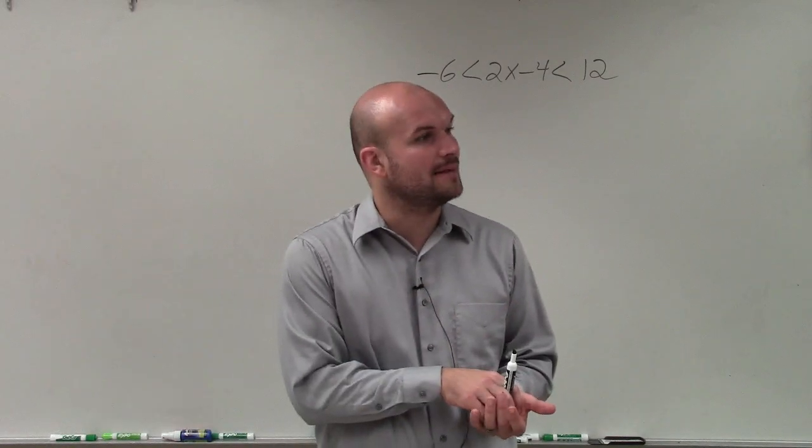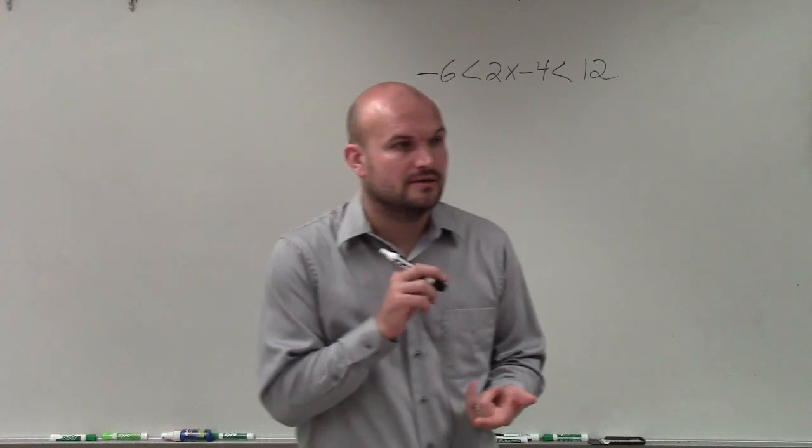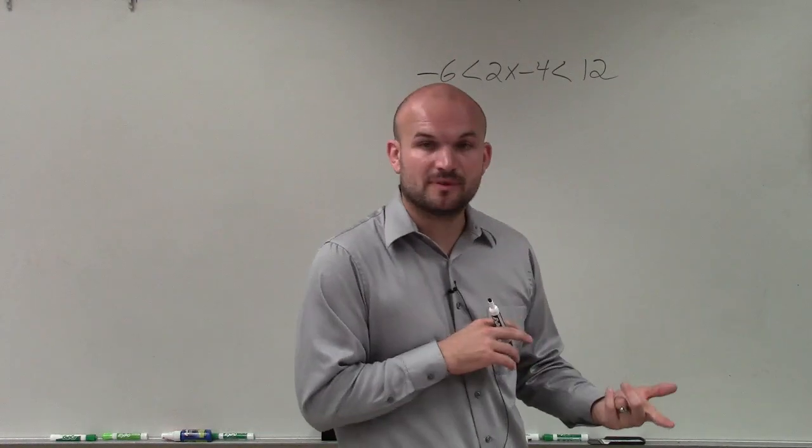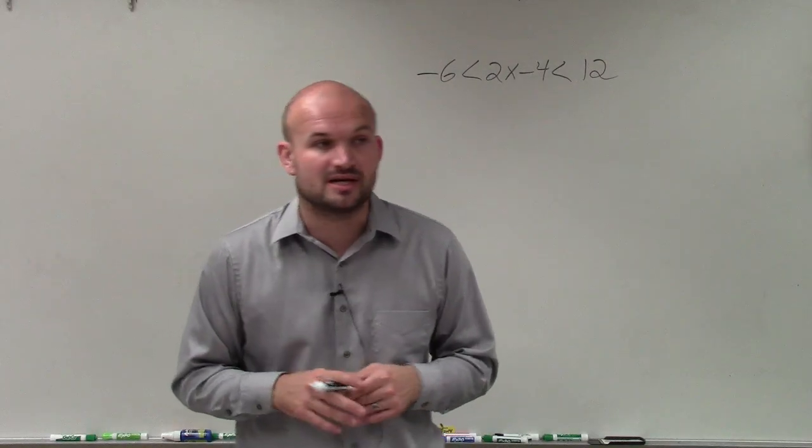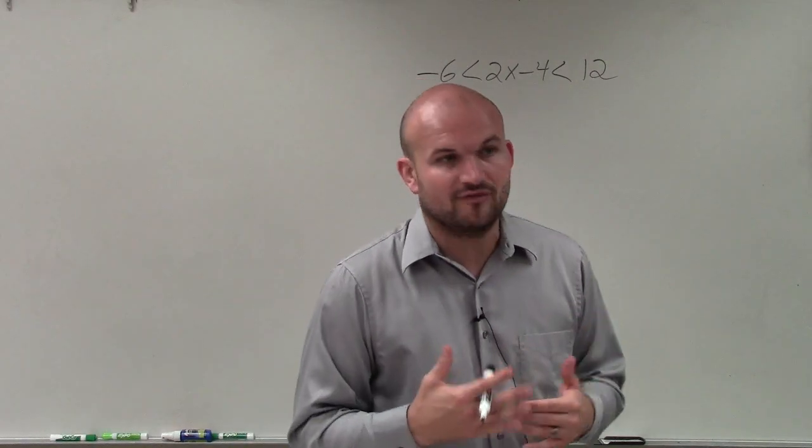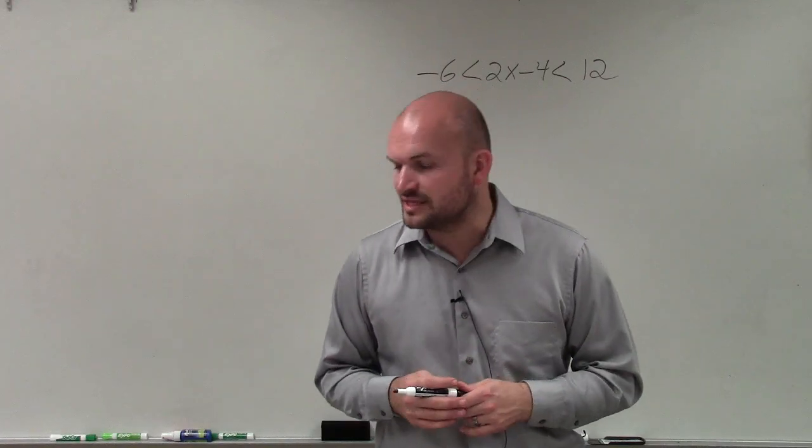Whenever we applied the operation of multiplying and dividing by a negative number, then we had to make sure we flipped the sign. As well as our solution, we had to make sure we graphed our solution, because our solution usually involved more than one solution. So we went to our number line to represent the solution.